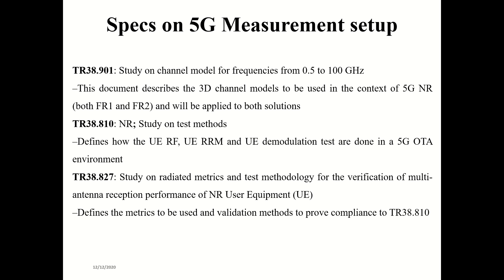For example, if you are checking the Node B physical layer, signals going to the UE will be described in another spec, so that's how all concepts come together. You must read the spec and whatever references are given there. One example is the study on channel models for frequencies from 5.5 to 100 GHz — this spec describes plenty of channel models including Rayleigh fading and others. New York University has even proposed a channel model included there.